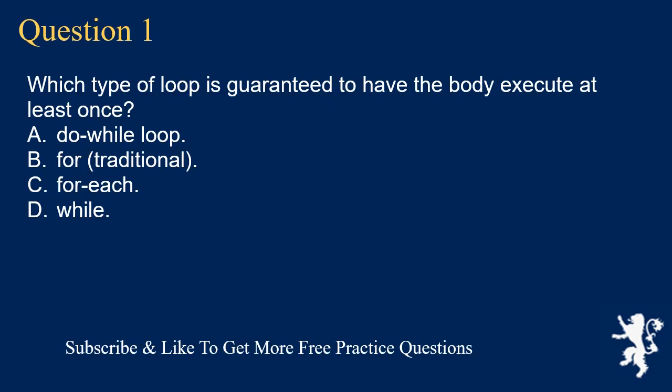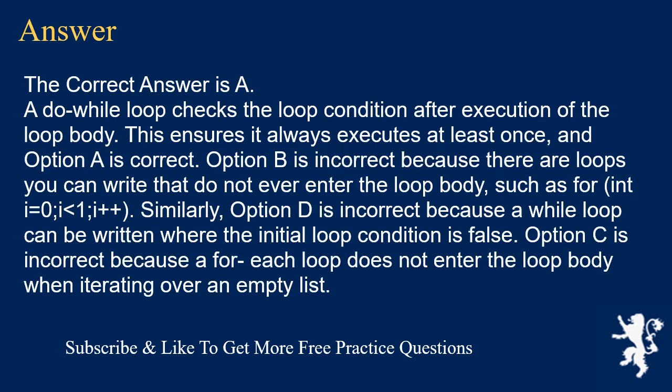Question 1. Which type of loop is guaranteed to have the body execute at least once? A. Do-while loop. B. For traditional. C. For each. D. While. The correct answer is A. A do-while loop checks the loop condition after execution of the loop body. This ensures it always executes at least once, and option A is correct.